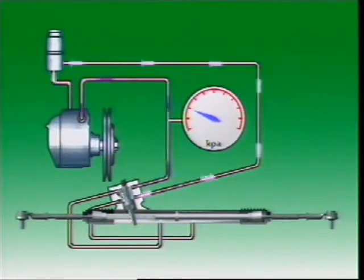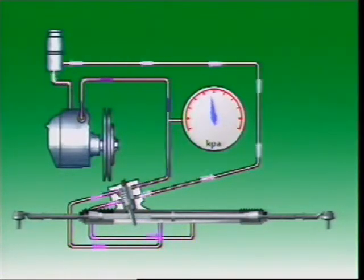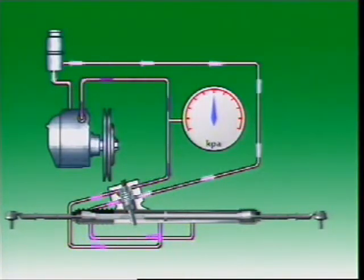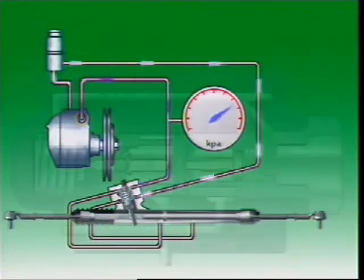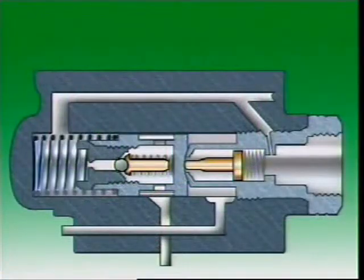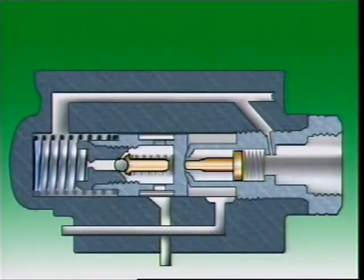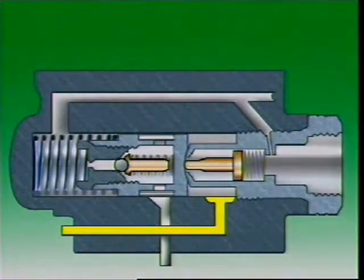All power steering pumps have a flow control valve to vary fluid flow and power steering system pressures. A pressure relief valve prevents excessive pressures developing when the steering is on full lock and held against its stops. The flow control valve is located at the outlet fitting of the pump. During slow cornering or when parking, pump speeds are normally low. There is less demand for fluid flow, but to provide the required assistance, high pressure is needed.